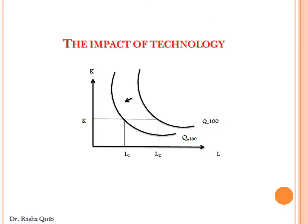With technical progress, the isoquant curve shifts inward, meaning the same output can be produced using fewer inputs. Generally, technology allows a producer to either produce the same output with lower factors of production, or achieve a higher level of output with the same factors of production.